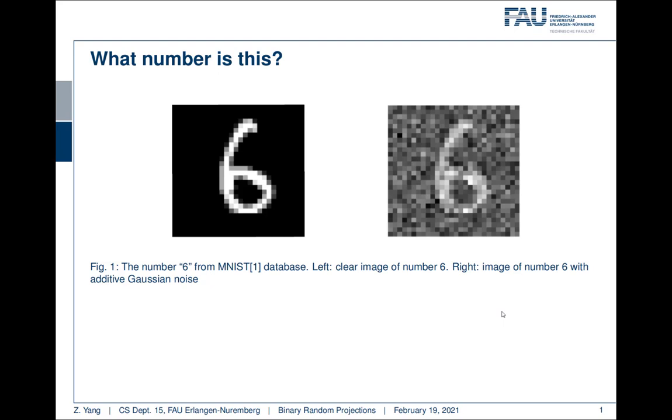If we train the network using the clear images on the left and test them on the noisy images on the right, the network would perform very bad, but this is easy for us humans. Why is that?